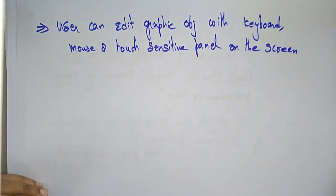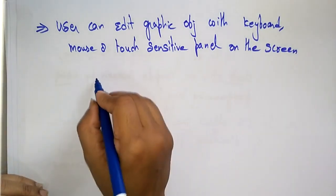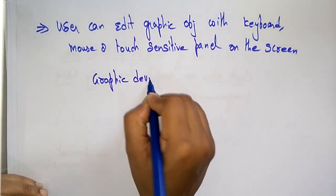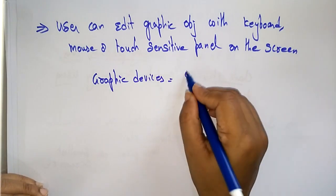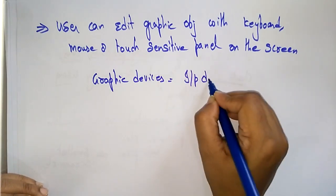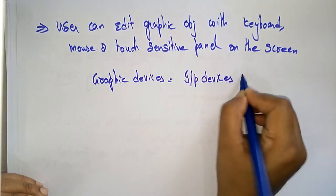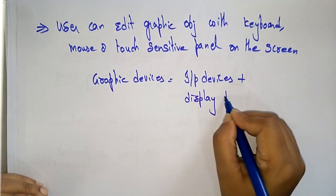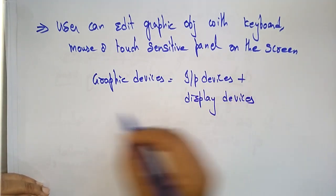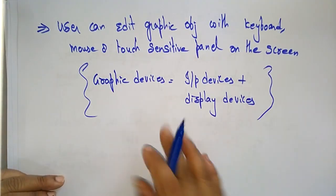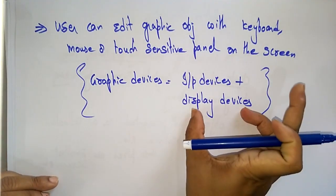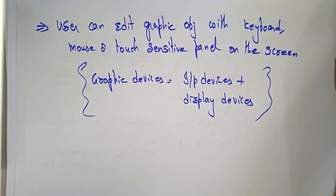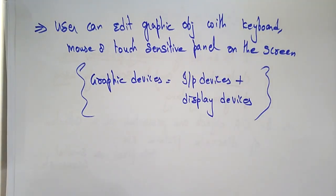A computer graphic device is a combination of input devices and display devices, that is output devices. Now let's see what are the advantages of using computer graphics.